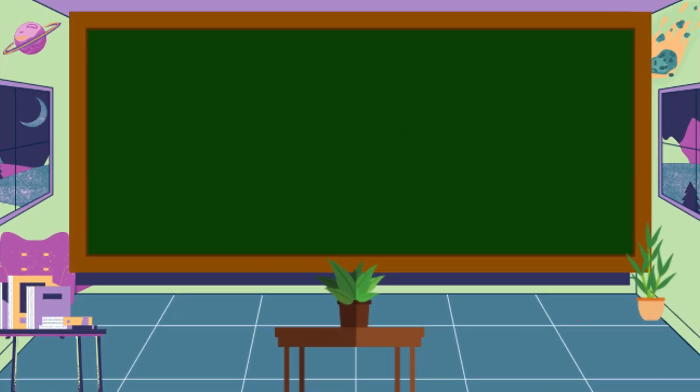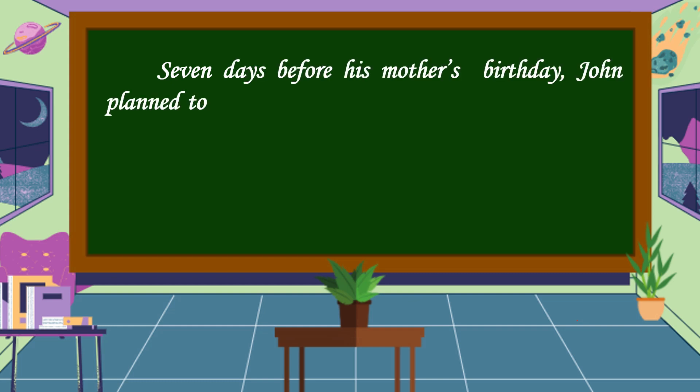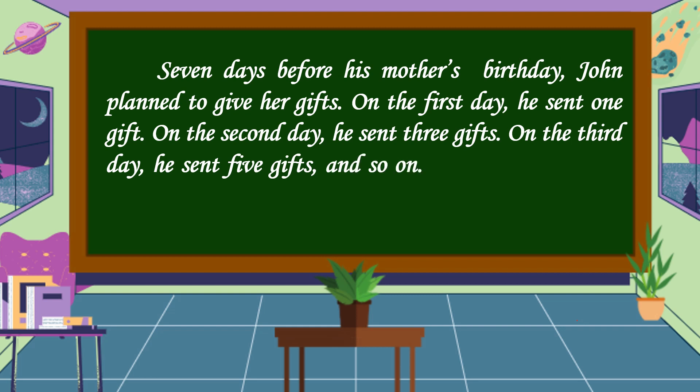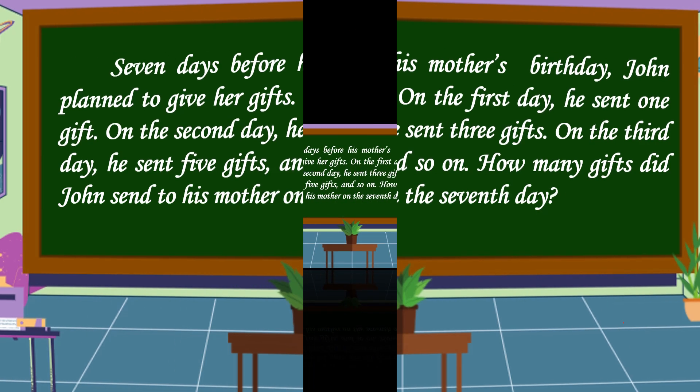Let's read the problem. Seven days before his mother's birthday, John planned to give her gifts. On the first day, he sent one gift. On the second day, he sent three gifts. On the third day, he sent five gifts and so on. How many gifts did John send to his mother on the seventh day?